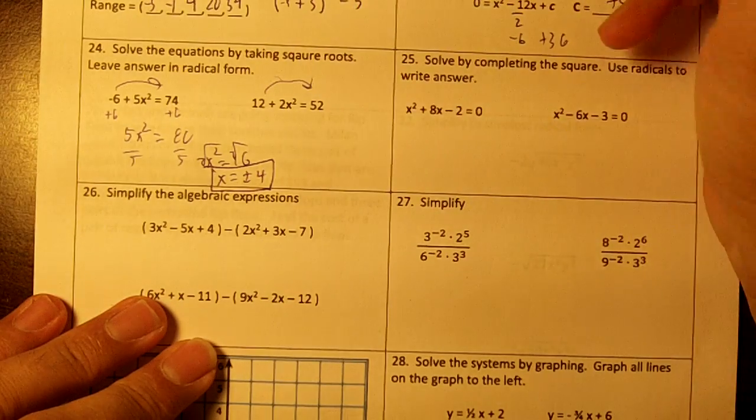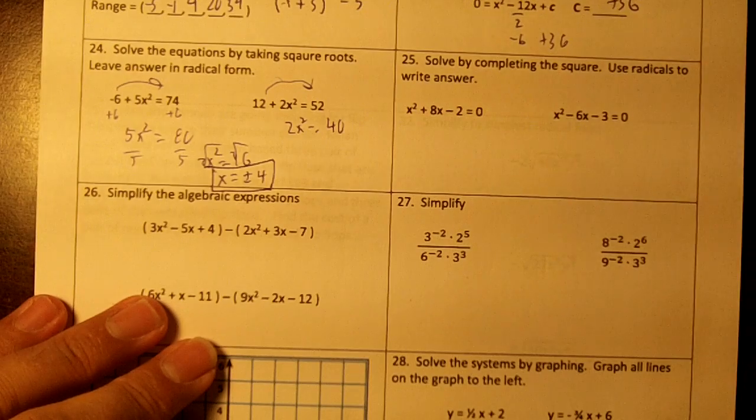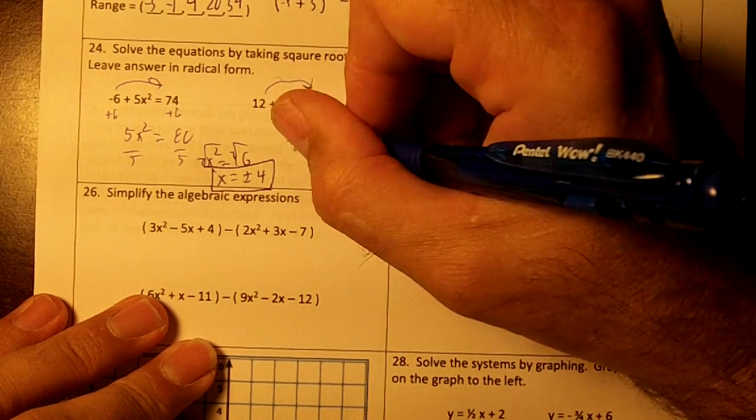Okay, on this one, move over the 12. You're going to get 2x² equals 40. I'm assuming you can do 52 minus 12 without showing that. Divide by 2.